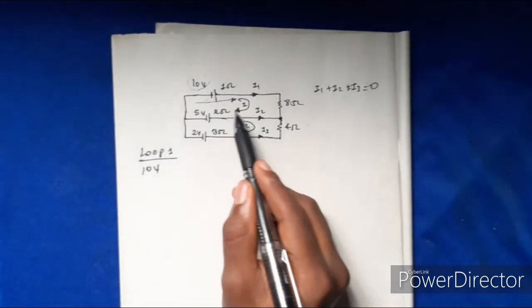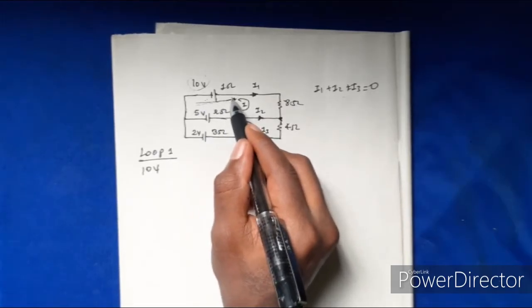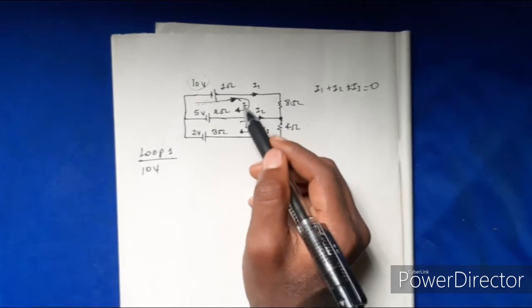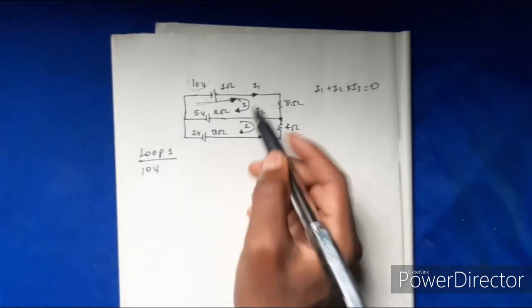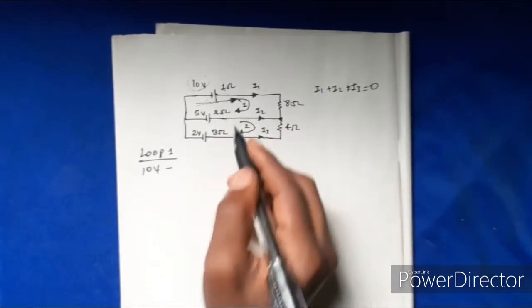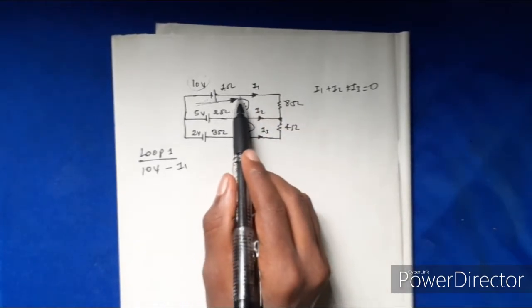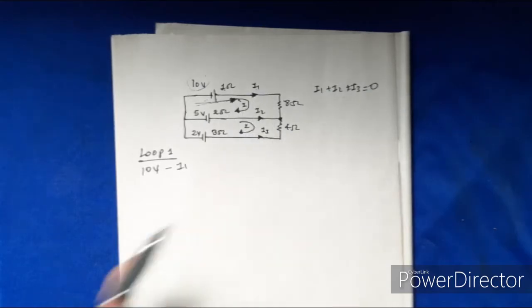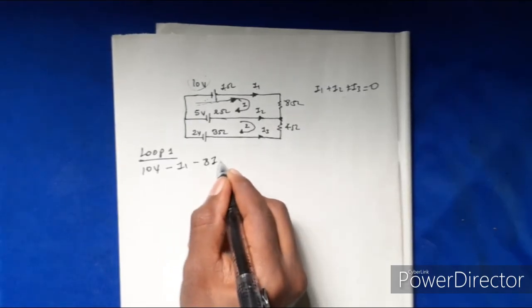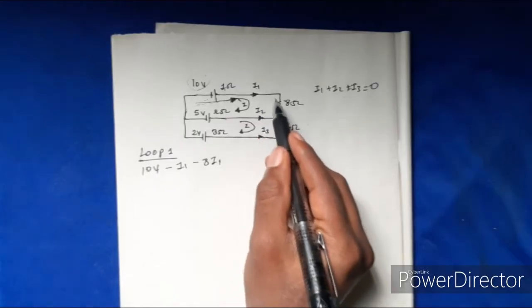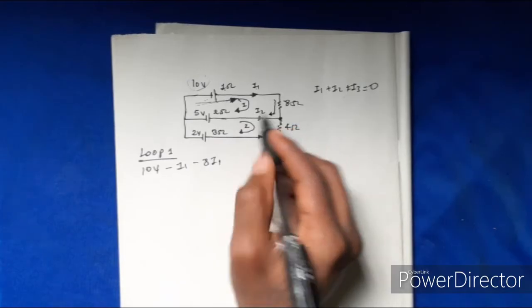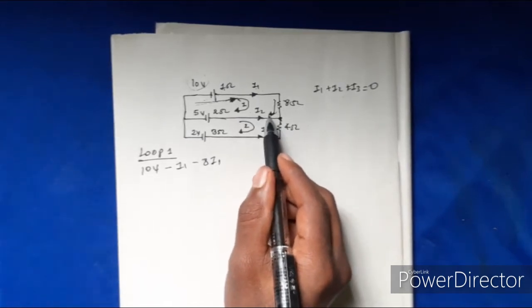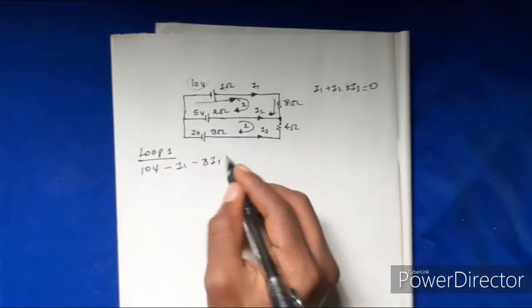If we look at voltage, the direction is equal to the voltage drop. The opposite direction is equal to the same way, and the same direction gives a negative value. So I1 is negative. If you add the voltage term, you will get negative 8I1.